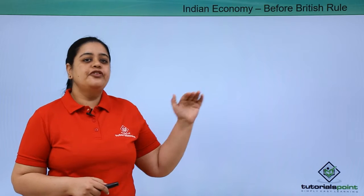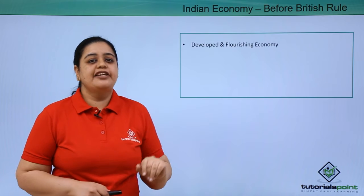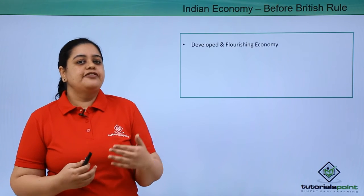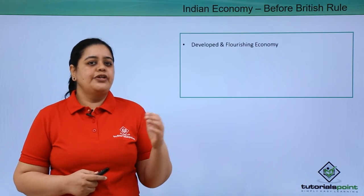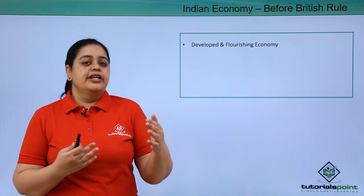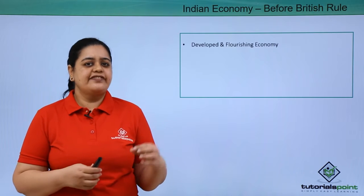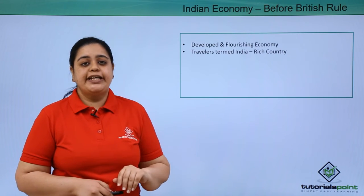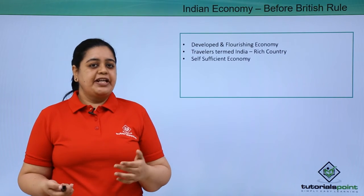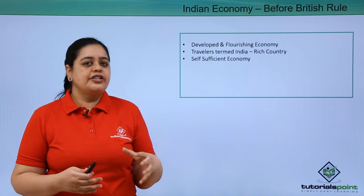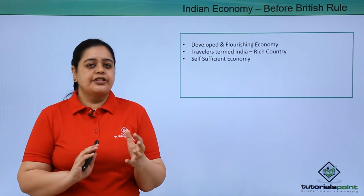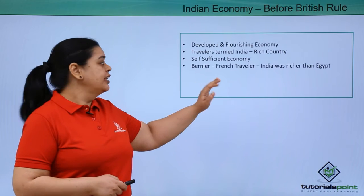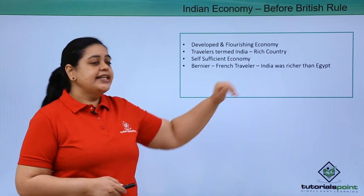Before British rule, we were a developed and flourishing economy. We were popularly known as a golden bird because of our enormous wealth. There was no commercialization of agriculture — farmers produced only for their own requirements, and any little extra was exchanged under the barter system to satisfy other needs. Most travelers who visited India at that time claimed it to be a rich, self-sufficient economy. One French traveler, Bernier, said India was richer than Egypt.